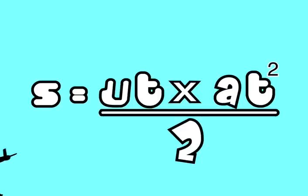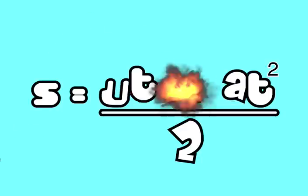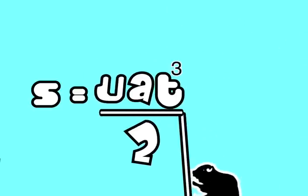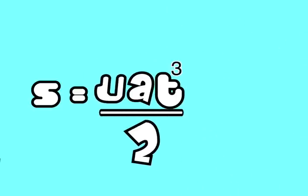The first thing we do is multiply by ut. So we now have s equals uat cubed divided by 2.